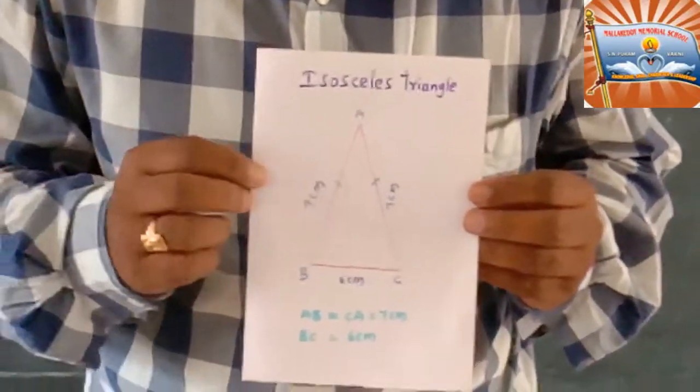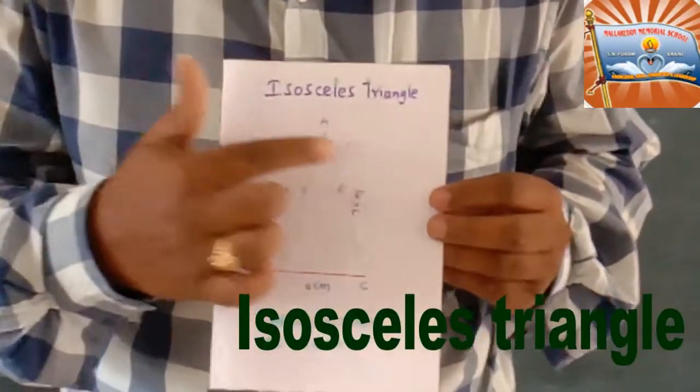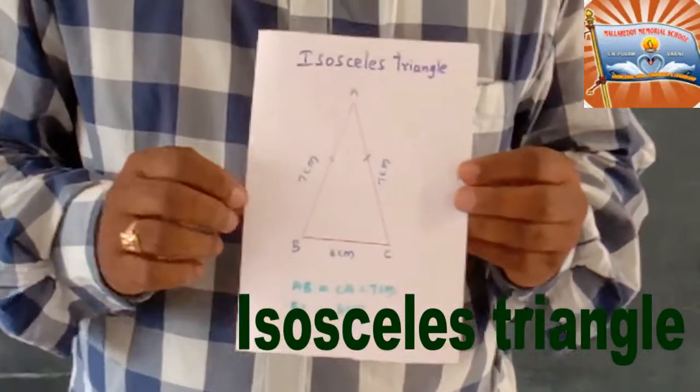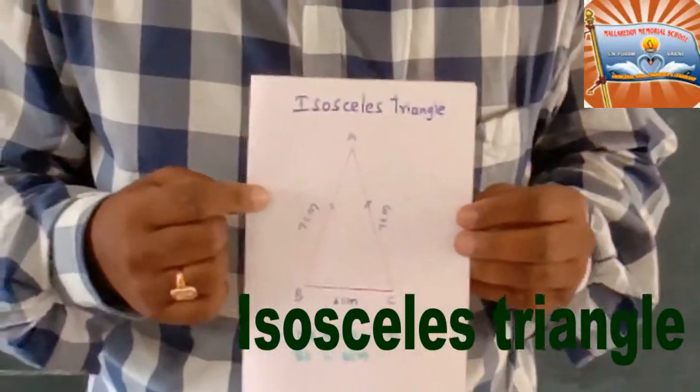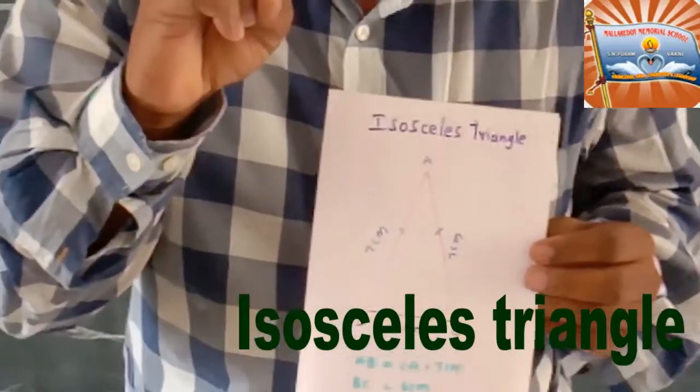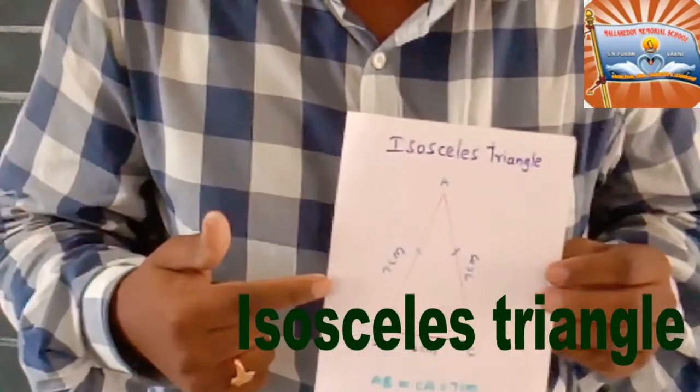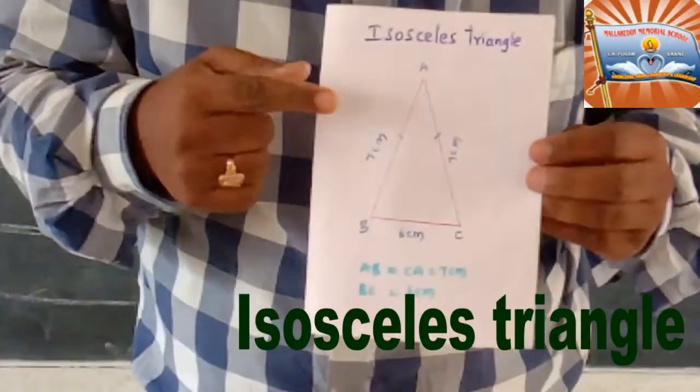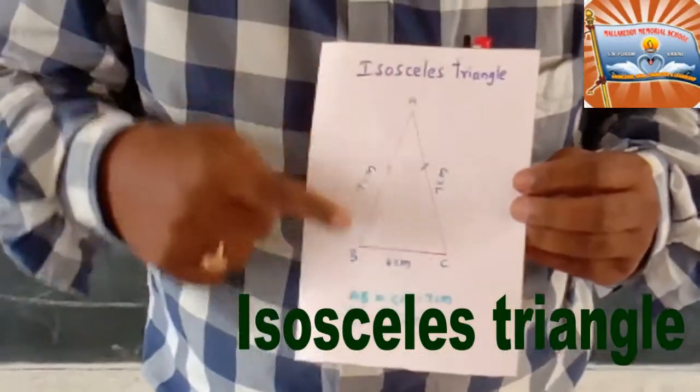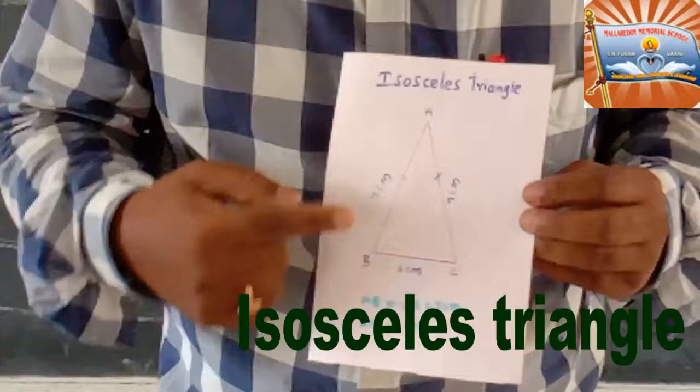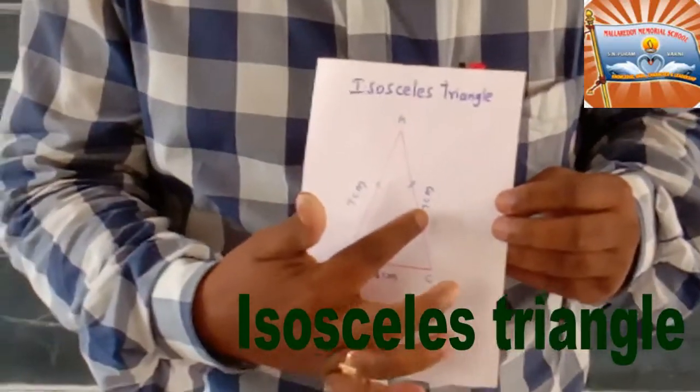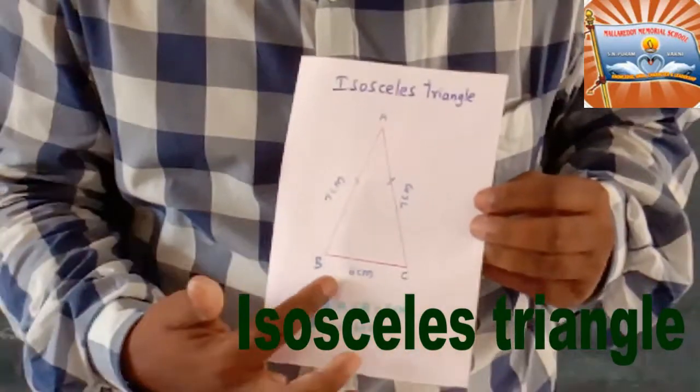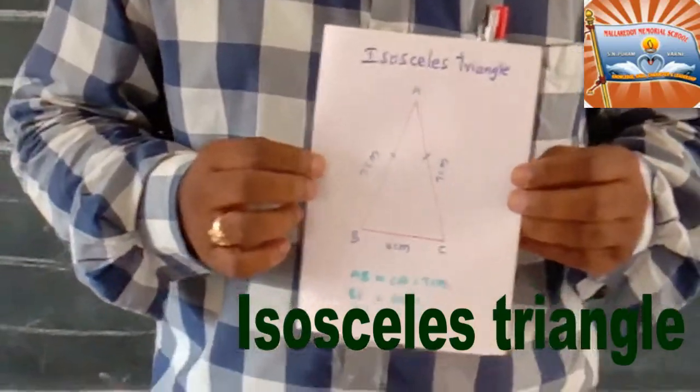The second type of triangle is isosceles triangle. The triangle with only two sides equal is the isosceles triangle. In this triangle, AB is 7 cm, AC is 7 cm, and BC is 6 cm. So this type of triangle is called isosceles triangle.